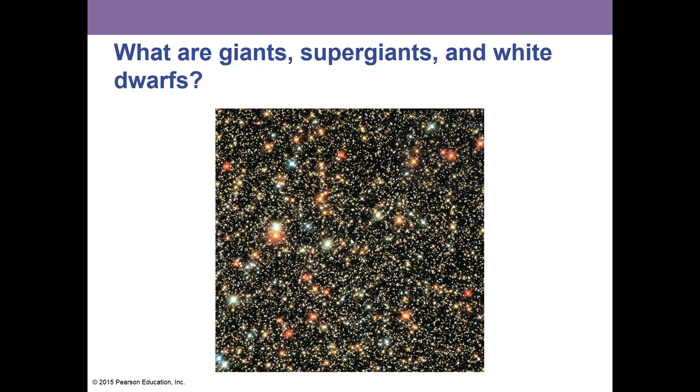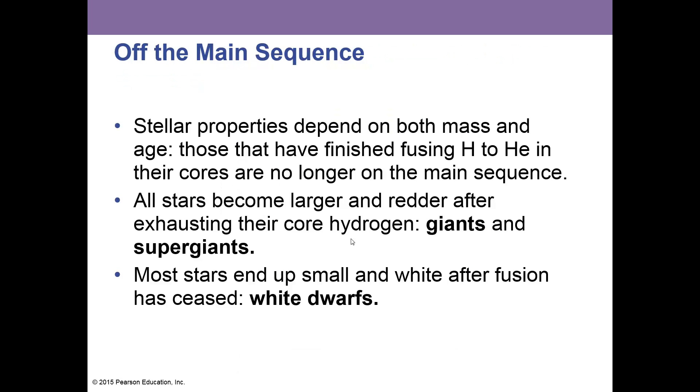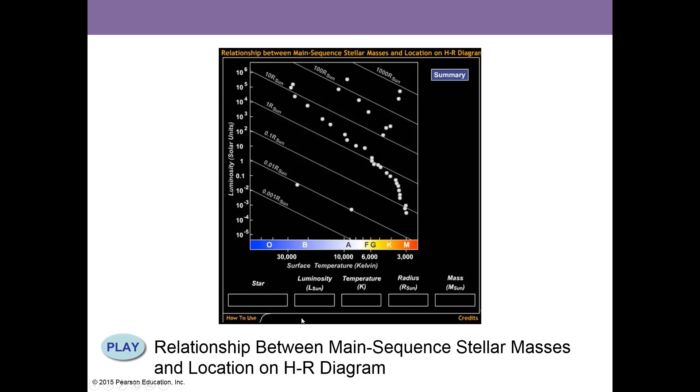What are the giants, supergiants, and white dwarfs? These are off the main sequence. Stellar properties depend on both mass and age. Those that have finished fusing hydrogen and helium in the cores are no longer on the main sequence. All stars become larger and redder after exhausting their core hydrogen—giants and supergiants. Most stars end up small and white after the fusion has ceased—these are the white dwarfs. Those are dead stars.